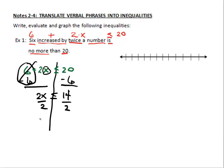And my last step is to divide both sides by 2. Now, since I divided by a positive number, I do not need to flip my inequality. So it will be 1x is less than or equal to 7. Now I'll go over to my number line.